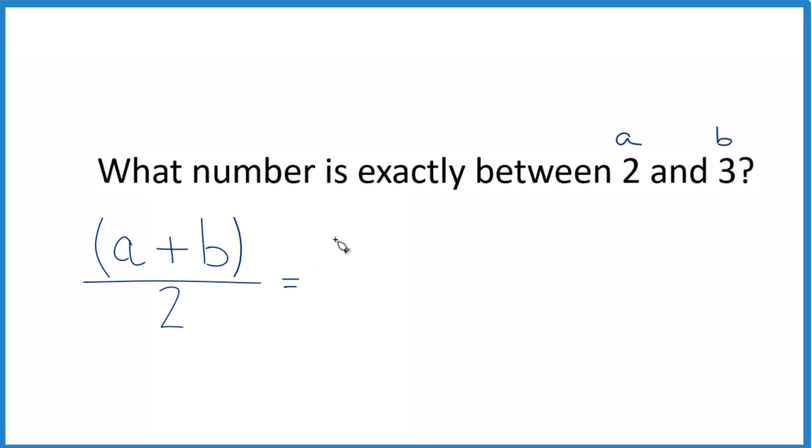So A plus B is 2 plus 3, and we divide that by 2. 2 plus 3 equals 5 over the 2. So the number exactly between 2 and 3 is 5 halves.